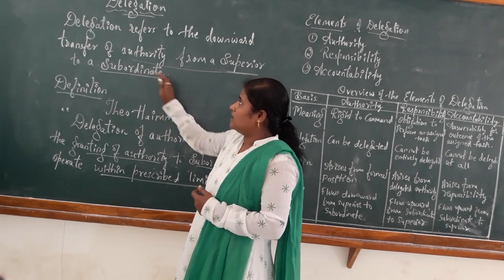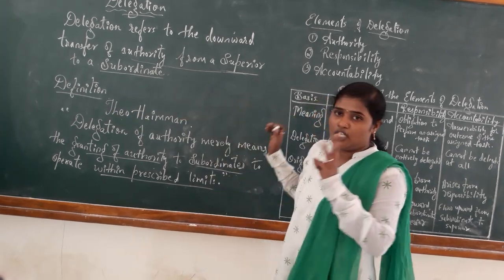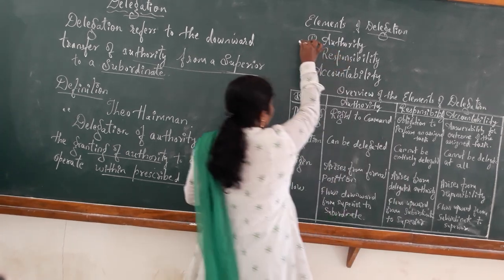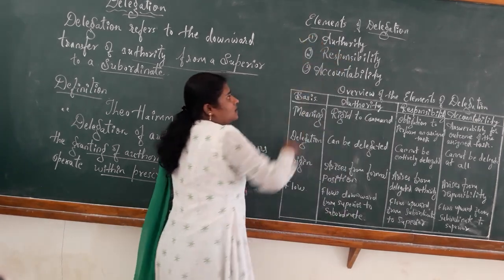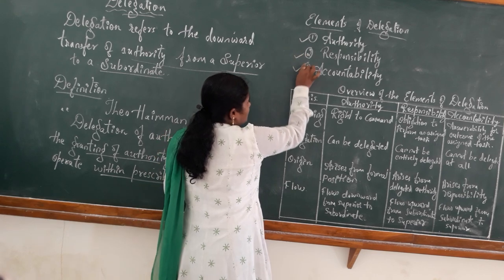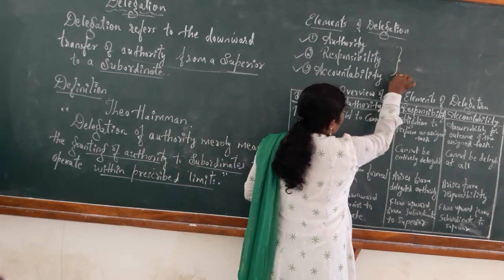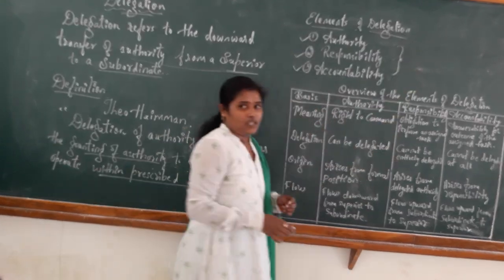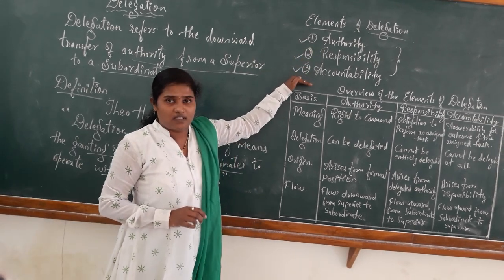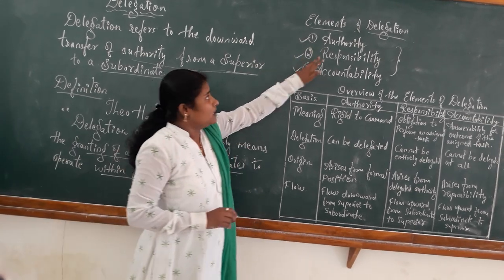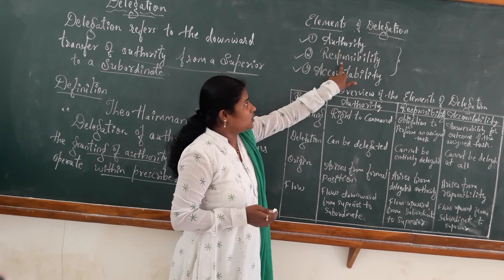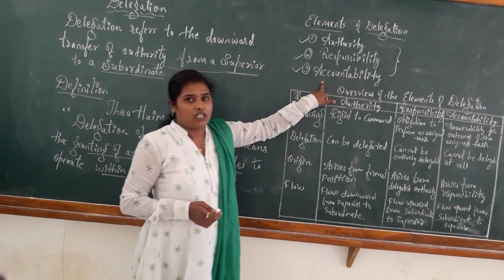In delegation, there are three important elements. The first is authority, the second is responsibility, and the third is accountability. These three are the flow of delegation — a one-by-one continued process. First is authority, then responsibility, then accountability.